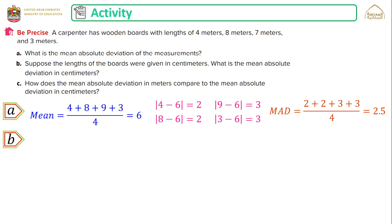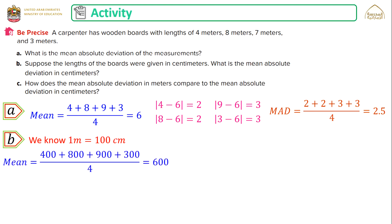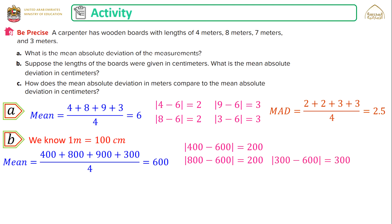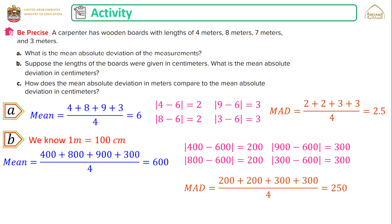Part b: if the lengths are given in centimeters, what is the mean absolute deviation? Converting: 4 m=400 cm, 8 m=800 cm, 7 m=700 cm, 3 m=300 cm. The mean is (400+800+700+300) ÷ 4 = 600 cm. The absolute differences are |400−600|=200, |800−600|=200, |300−600|=300, and |700−600|=100 — wait, confirmed as 200, 200, 300, 300. The mean absolute deviation is (200+200+300+300) ÷ 4 = 250 centimeters.